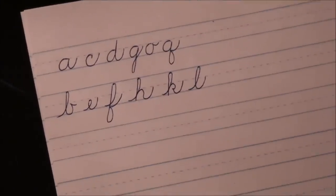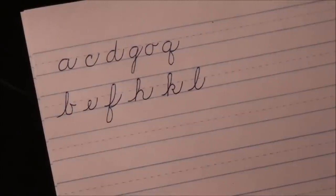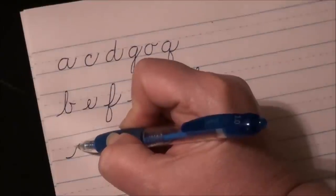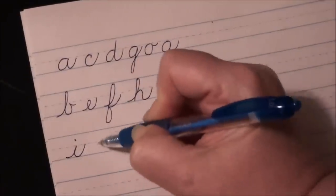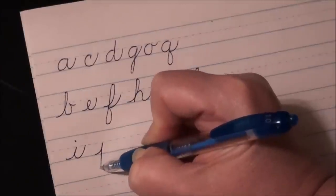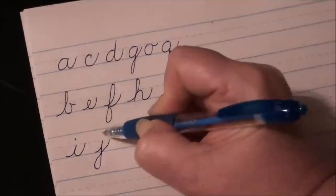Okay, now we're going to do a third row, and this is the upstroke letters. So our first upstroke letter is I, baseline, upstroke, and dot. J, upstroke to your midline, down, loop to the left, cross over at the baseline, touch your midline, and dot.